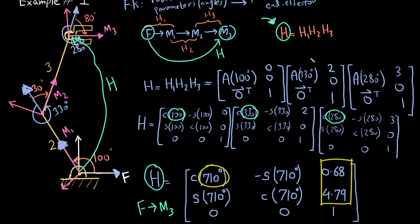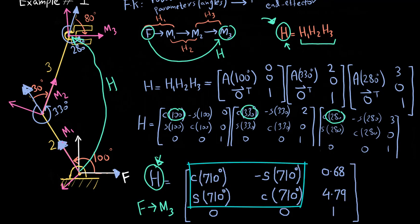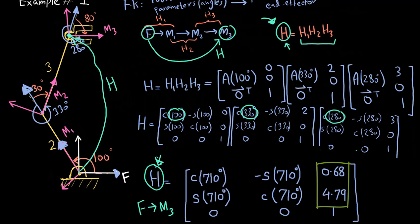Once H1, H2, and H3 are multiplied together, we end up with another homogeneous transform with the same properties — a 3×3 matrix where the top-left submatrix is the rotation matrix and the remaining column is the displacement term. From the displacement term we can read off 0.68 and 4.79: these are the x and y coordinates of the M3 frame's origin expressed in the fixed frame. So 0.68 units along x and 4.79 units along y locates the end effector in the fixed frame.